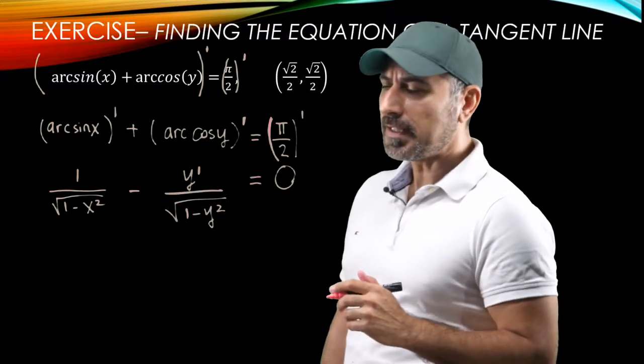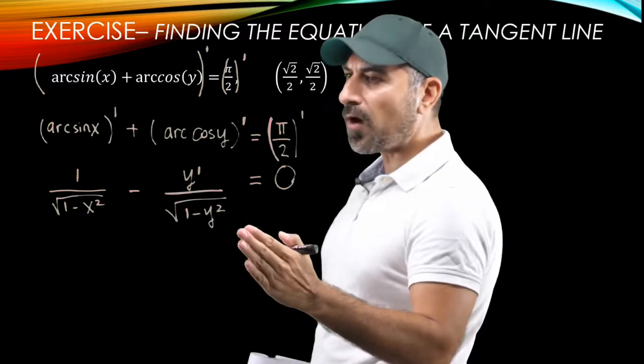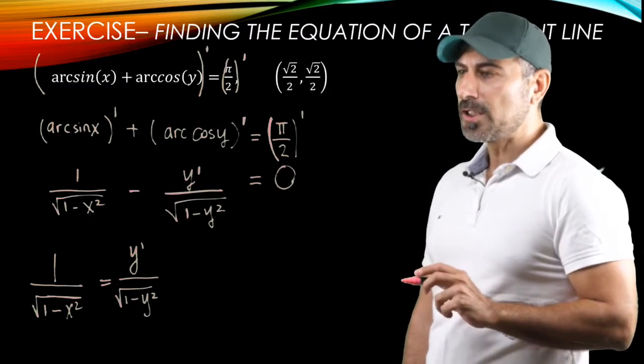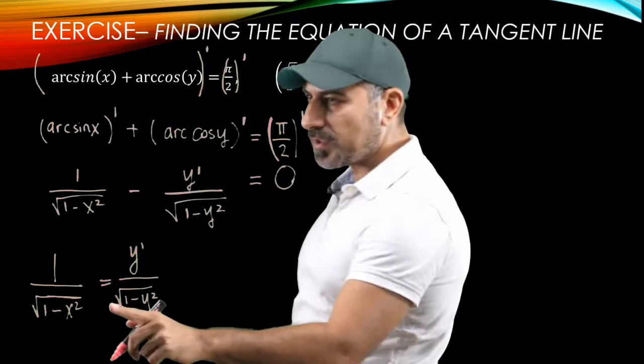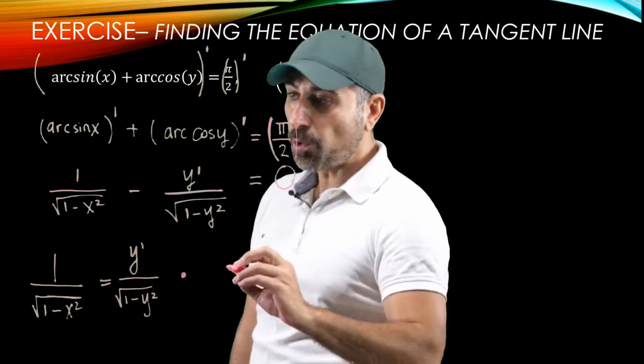All right, the next task in implicit differentiation is to solve this equation for y prime. To achieve that, we add this term to both sides of the equation. And now we have this equality here.